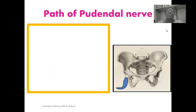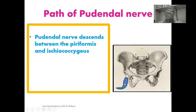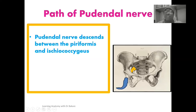Let's now look at the course of the pudendal nerve after its emergence. After emerging, the pudendal nerve descends between the piriformis and the ischiococcygeus. Using this image for illustration, this is the pelvic bone, and the piriformis, highlighted in yellow, extends from the anterior surface of the sacral bone, passing through the greater sciatic foramen before inserting on the greater trochanter of the femur.